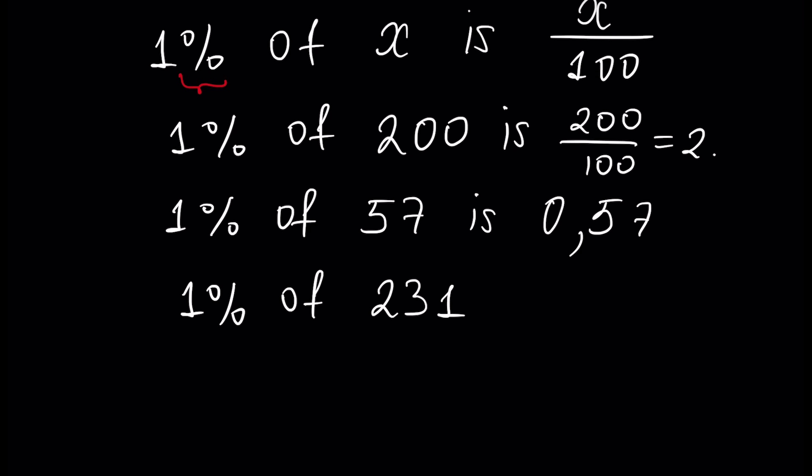1% of 231 is - we put a floating point here - and the answer will be 2.31.